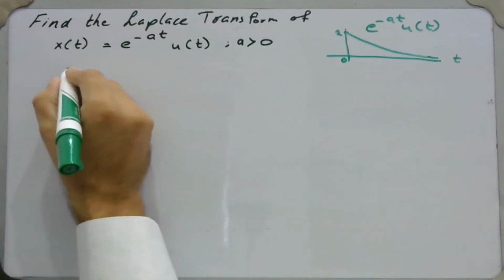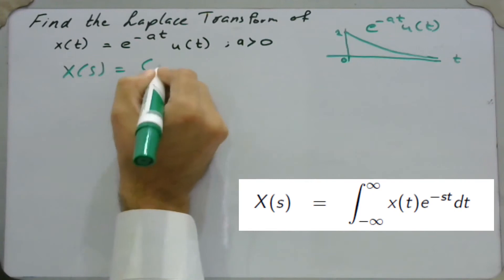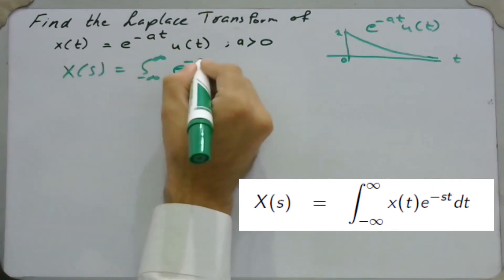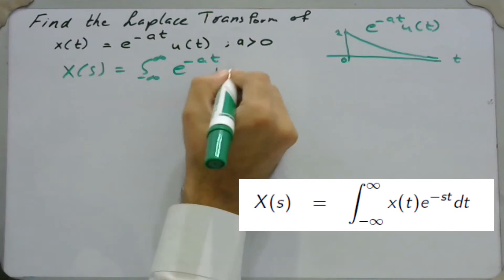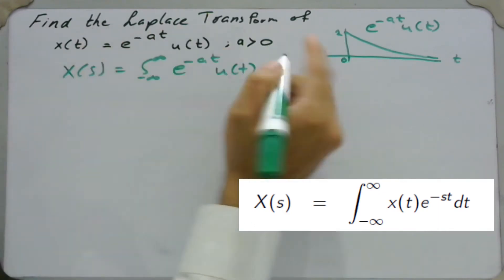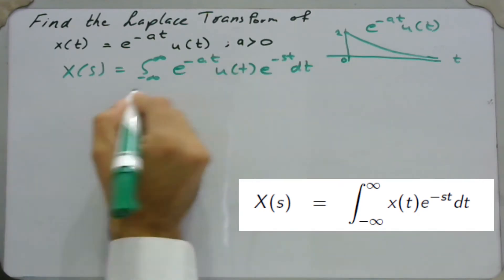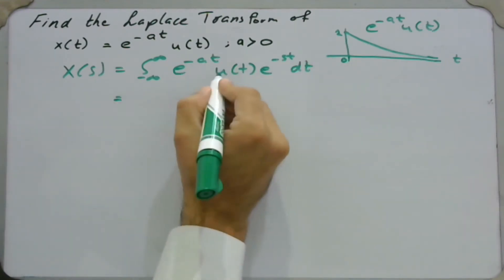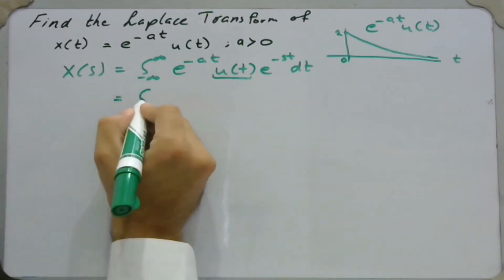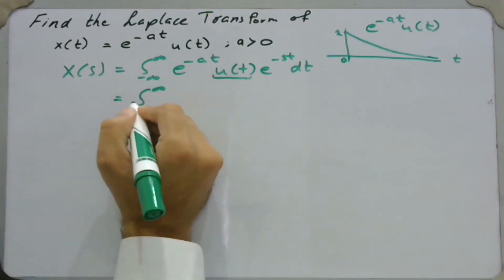In order to find the Laplace transform, we know that X(s) is the integral from minus infinity to infinity of x(t) — which is simply e^(-at) u(t) — multiplied by e^(-st) dt. In the next step, we absorb the unit step function into the limits of integration, so the integration starts from 0 and goes to infinity.